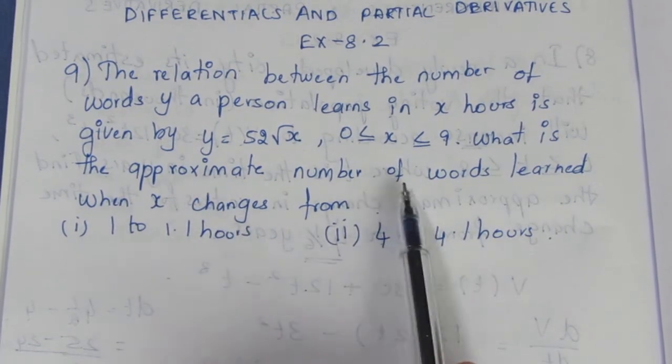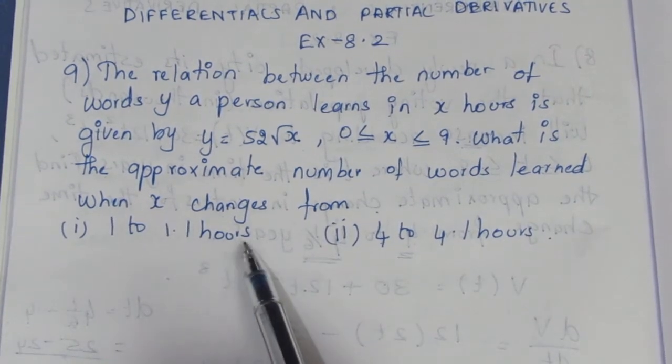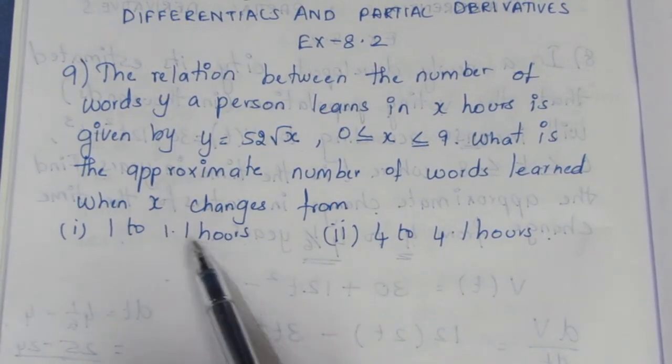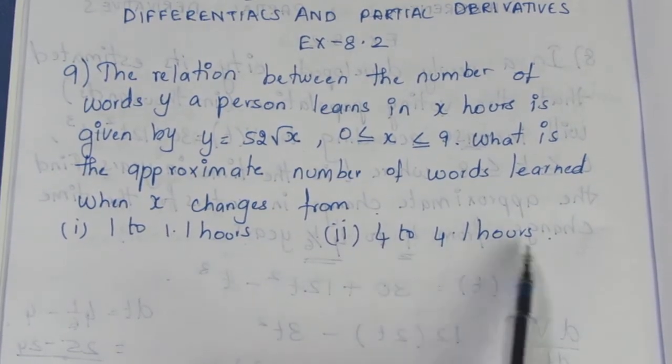What is the approximate number of words learned when x changes from 1 to 1.1 hours? If x is 1 hour, then 1.1 hours will be the change in the first subdivision. Second, 4 hours will change to 4.1 hours.